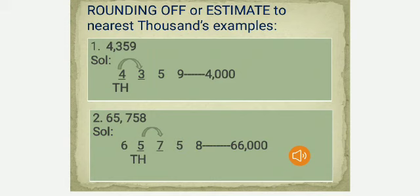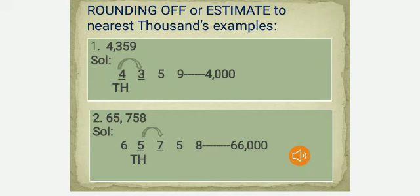Next, rounding off to the nearest thousands place. First example: 4,359. The next digit after the thousands place is 3, which is less than 5, so we round down to 4,000. Second example: 65,758. The thousands digit is 5, and the next right digit is 7, which is more than 5, so we round up 5,758 to 6,000. The overall result is 66,000.